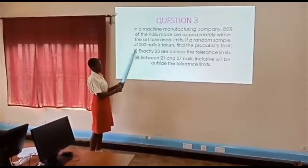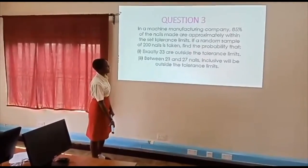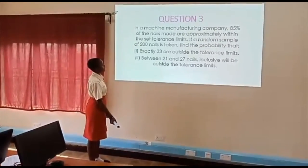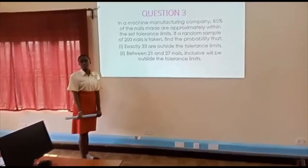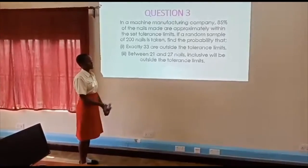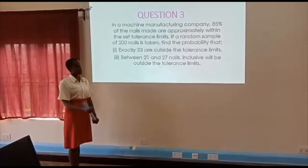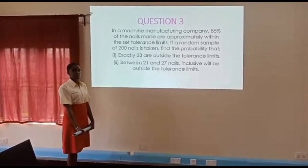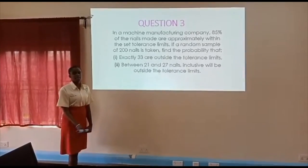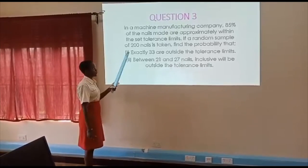If a random sample of 200 nails is taken, find the probability that exactly 33 are outside the tolerance limits. When we read the question, we realize that we are doing a normal approximation of a binomial distribution.